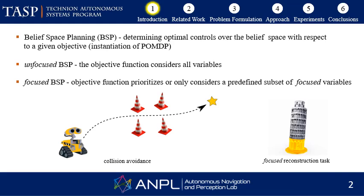As an example, we can think of a collision avoidance task where localizing obstacles is much more important than localizing other landmarks in the environment that do not pose immediate threat of collision. A second example would be a focused reconstruction task such as creating a 3D model where we specifically need to recover the foundations with high accuracy for maintenance work.